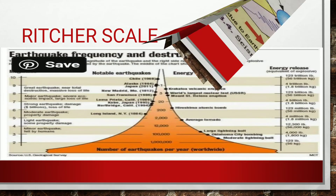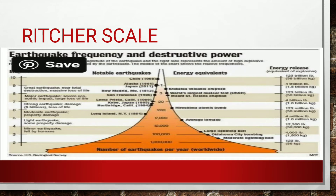The Richter scale and Mercalli scale are both used to measure the intensity of earthquakes. The Richter scale measures the power of an earthquake on a scale of 1 to 9. The Assam earthquake in India of 1897 was of 8.7 magnitude. The Gujarat earthquake in 2001 had a magnitude of 7.7 on the Richter scale, yet it caused grave damage.